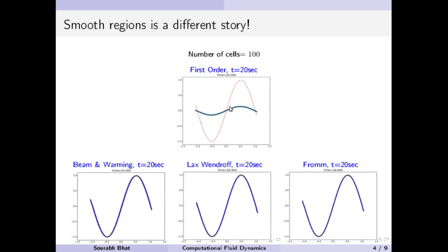You can see the amount of error and deviation from the exact solution. Instead, if we use higher order methods in smooth regions, we get very accurate solutions. Even after a time of 20 seconds, this higher order method almost exactly retains the sine wave and the diffusion is almost negligible.